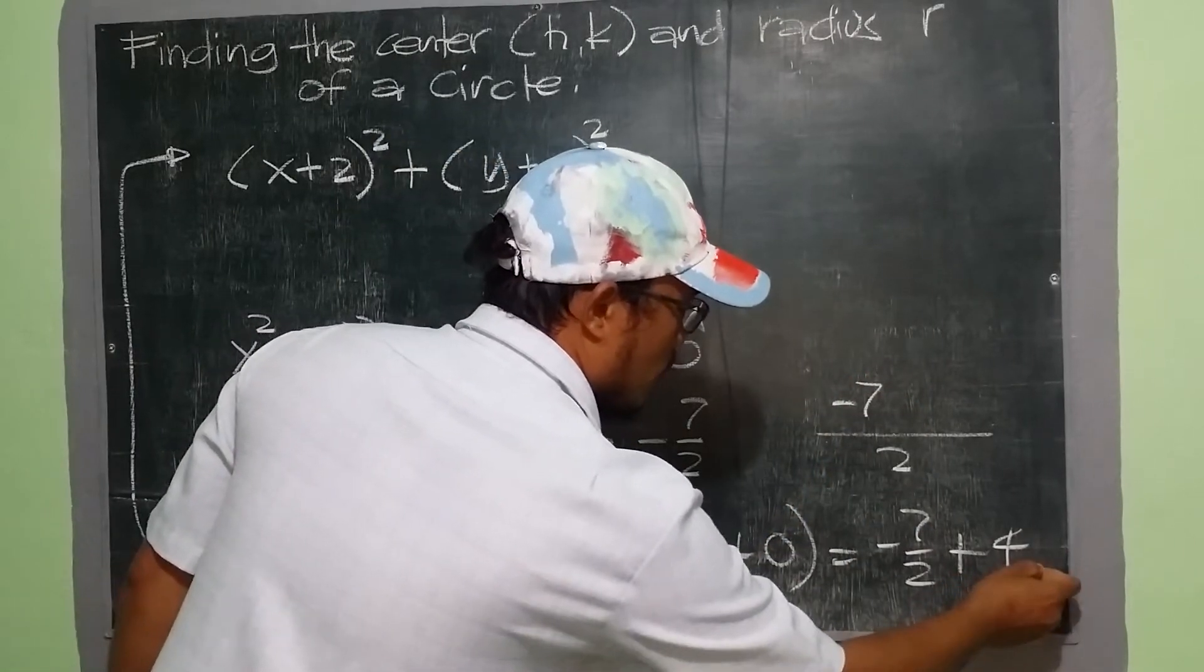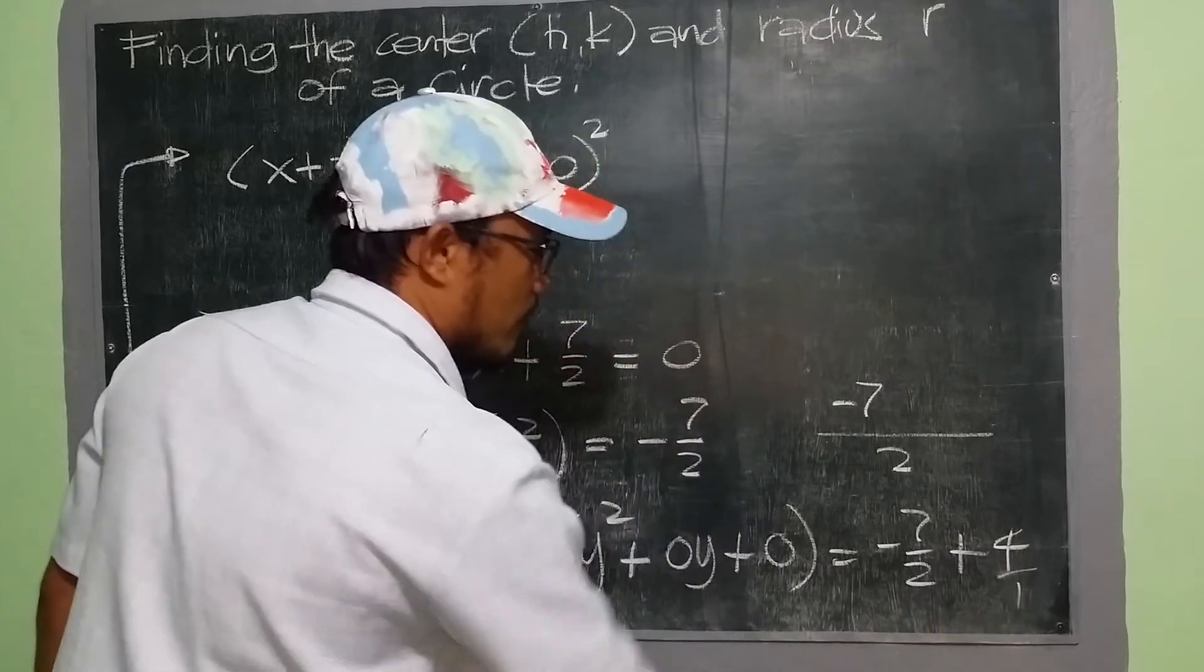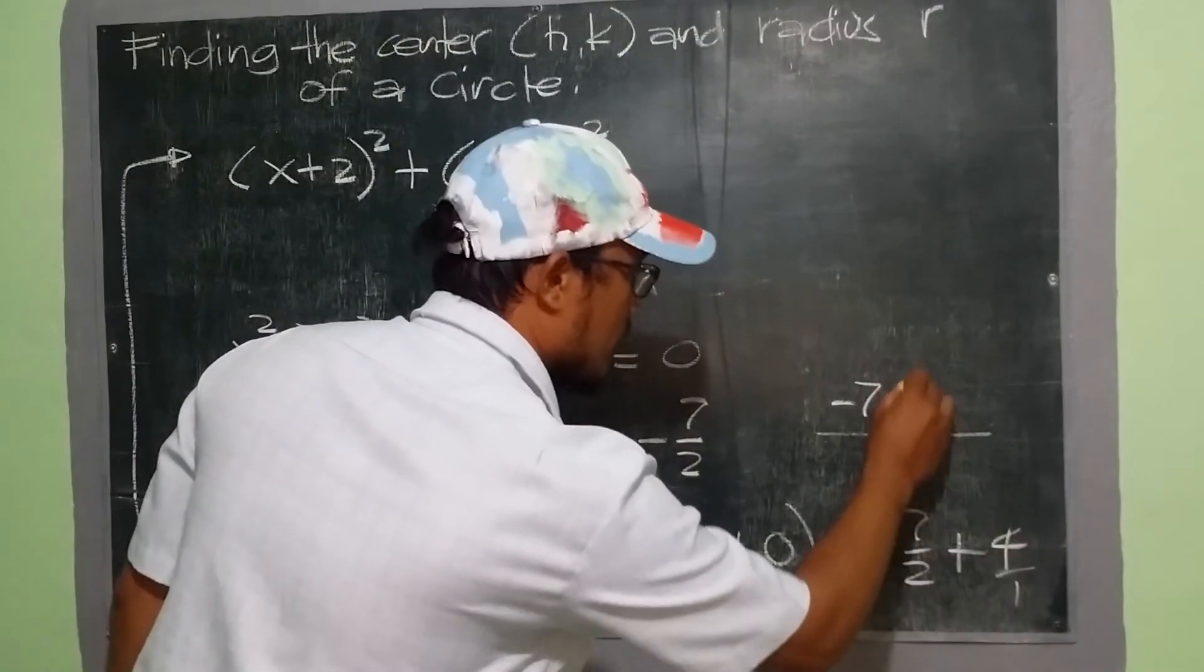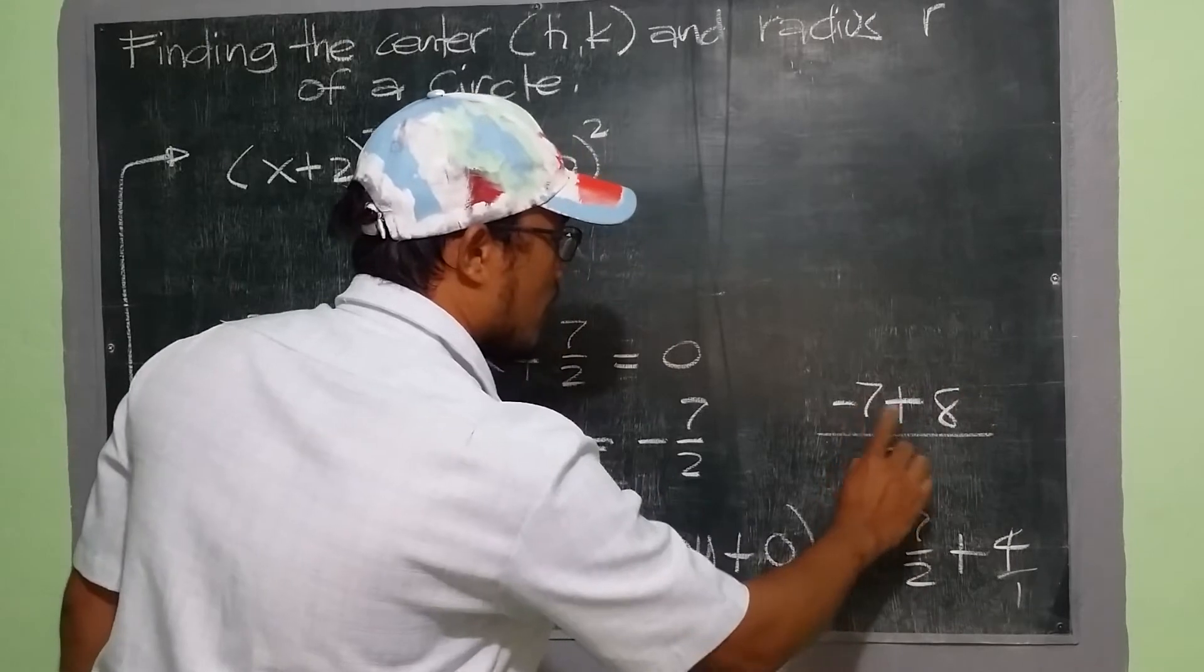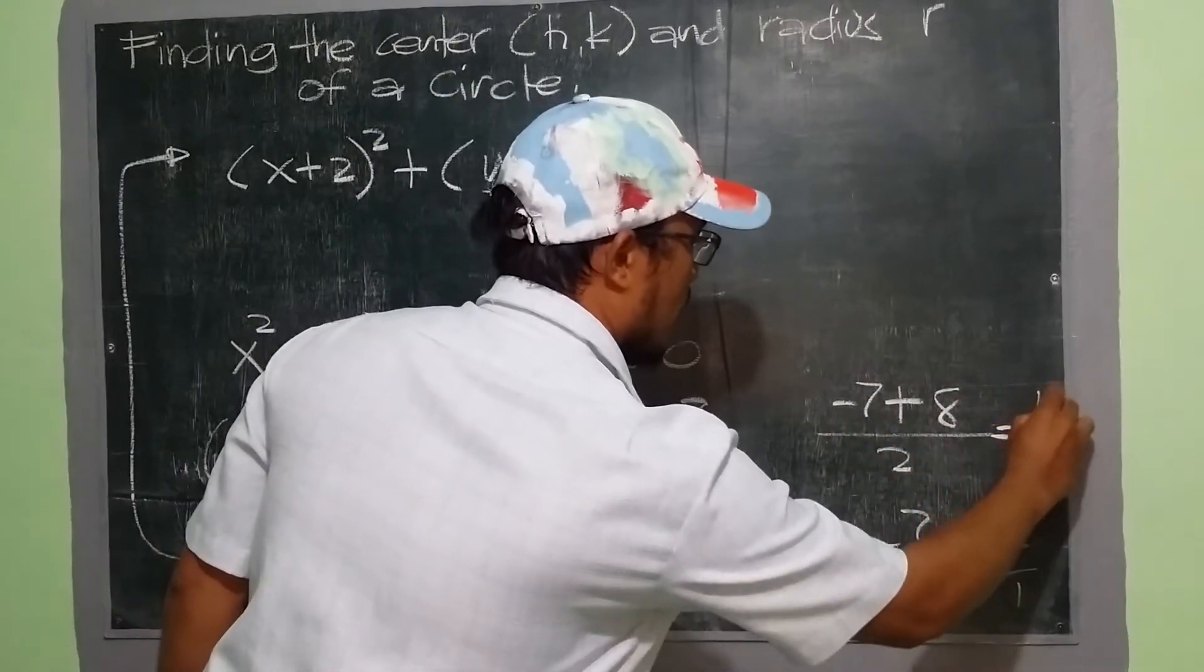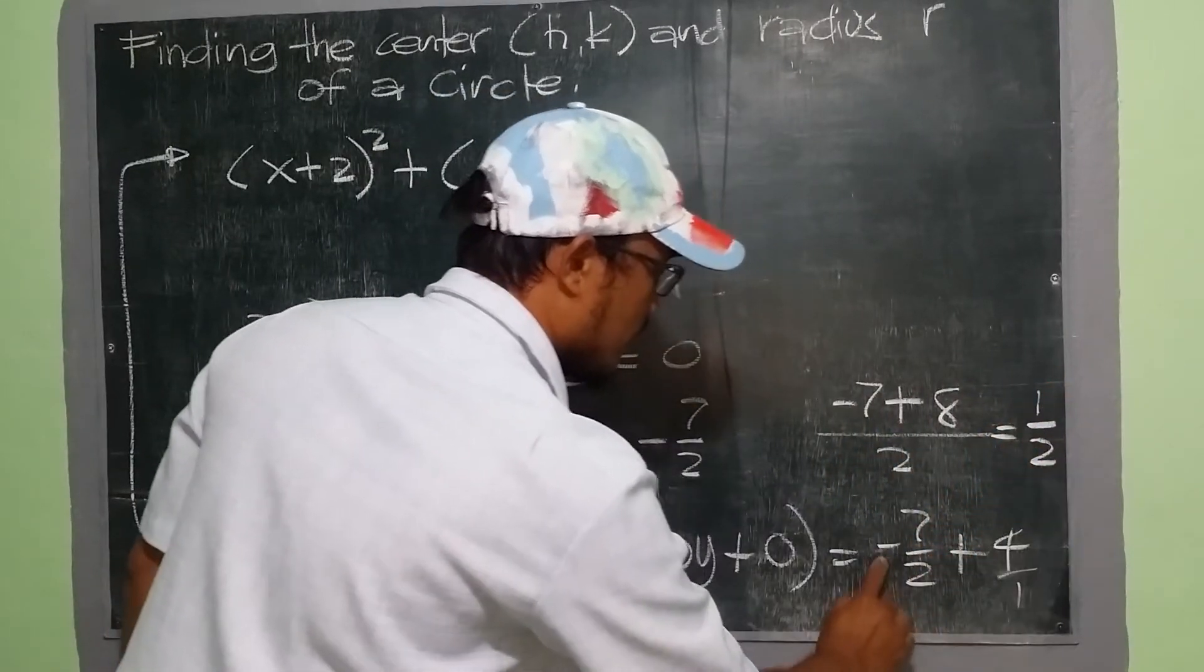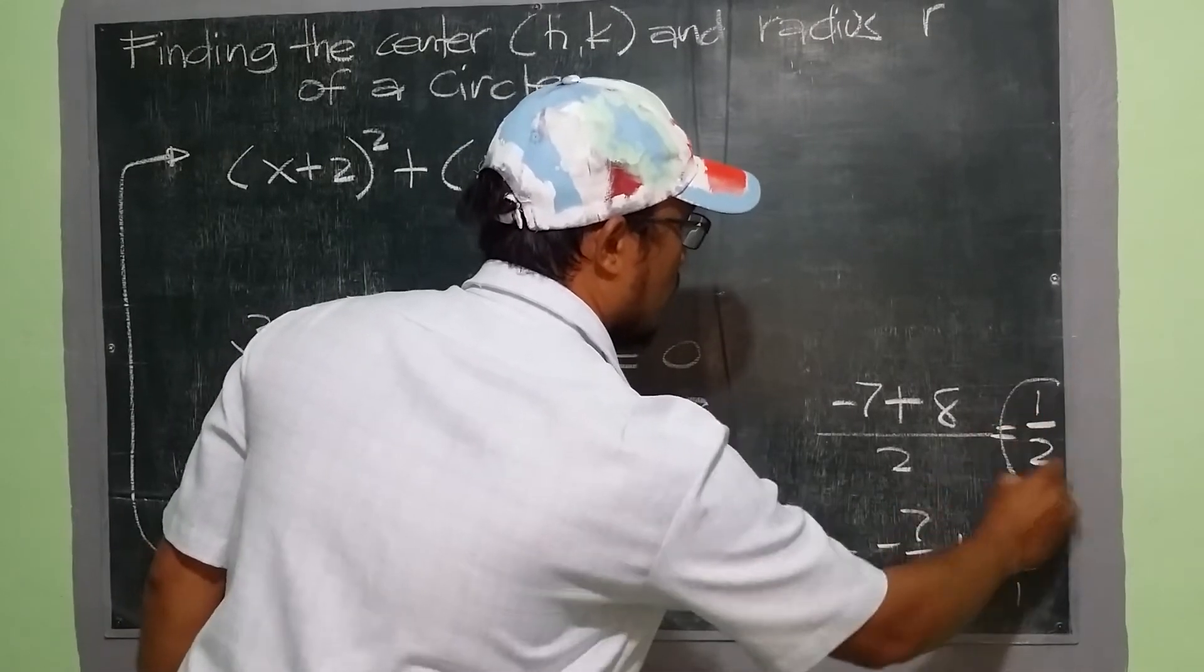The denominator of 4 is 1, and it is under 2, that is 1. So we have 2 divided by 1 is 2, times 4, that is plus 8. Negative 7 plus 8 is equal to 1 over 2. Therefore, negative 7 over 2 plus 4 is 1 half or 1 over 2.